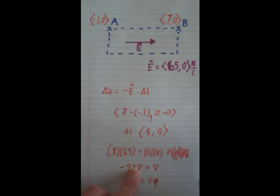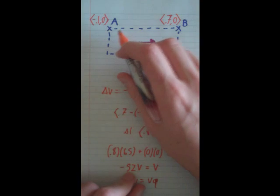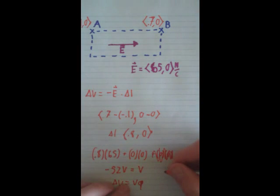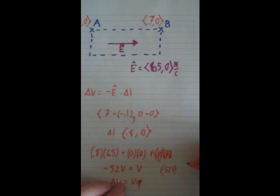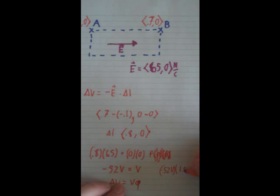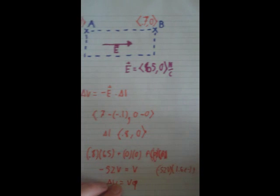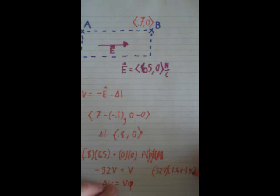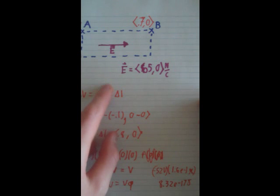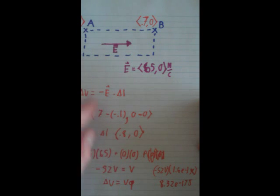If you know that it's negative 52 volts and we're trying to take a proton from here to here, then we just do negative 52 volts times the charge of a proton, which is 1.6e to negative 19th coulombs. When you multiply those two together, you get 8.32e to negative 17th joules. And that's how you figure out voltage and how much energy it takes to take something across there.